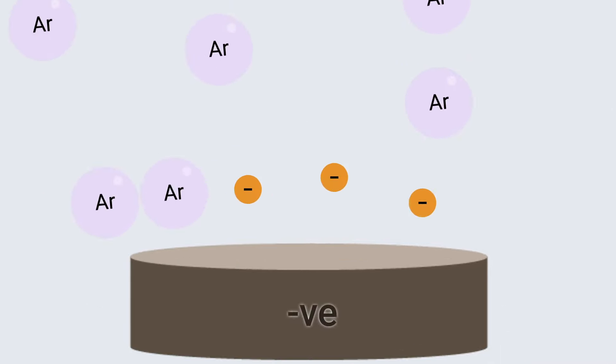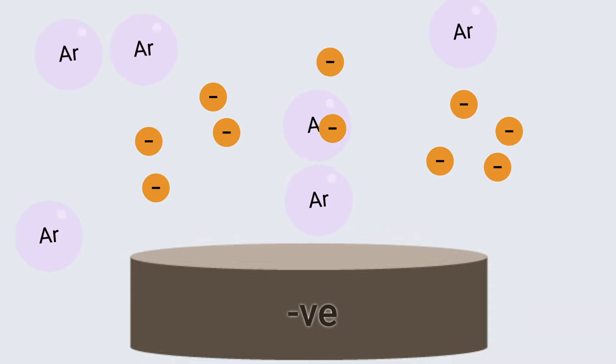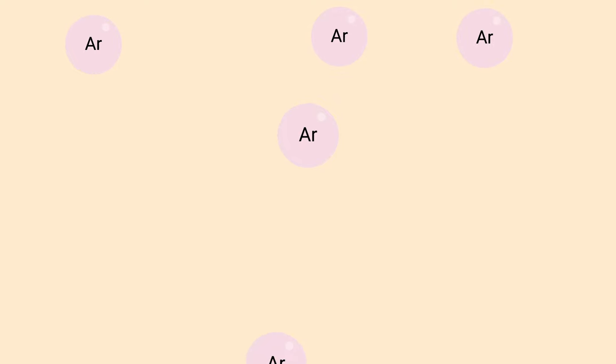When this voltage is applied, existing free electrons in the sputtering gas experience an electric field and accelerate away from the cathode. They will then experience high-energy collisions with other neutral atoms in the gas, causing their electrons to be knocked off, turning them into ions.